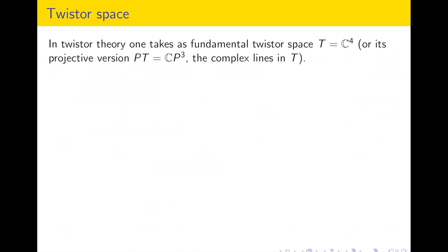Twister space is just C4. We're mainly interested in working projectively — taking C4 and modding out by complex multiplication — to get the complex lines in C4, which is the space CP3. So the projective twister space is CP3.